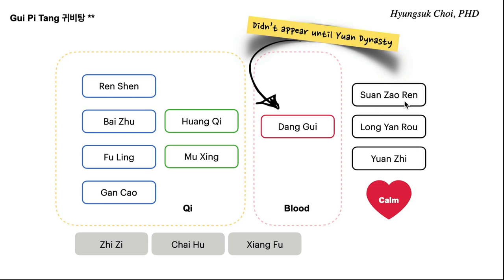Sanchaoren is jujube, Chinese date. Longanro is a very sticky herb which tonifies fluid and also calms shen. Yuanchi is the herb used for calming shen. So all these herbs calm shen.